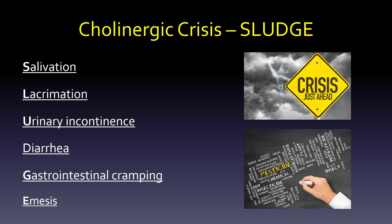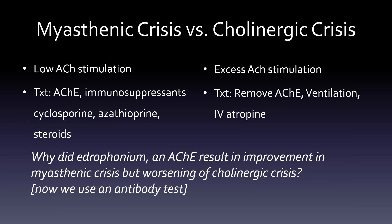Cholinergic crisis can come from pesticides and organophosphates — so someone is going to get it at the farm. We have two competing conditions: myasthenic crisis and cholinergic crisis. Both look very similar on presentation, but one is because of low acetylcholine stimulation and the other is because of excess acetylcholine stimulation. We use an antibody test now which can let us know which it is.